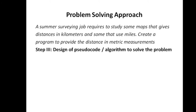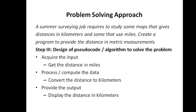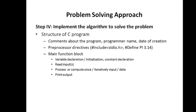In this video I will explain how to convert an algorithm into a C program, compile it, and get the output. For our problem of converting miles into kilometers, we already have the algorithm. The first step is to get the distance in miles as input, then convert the distance to kilometers, then print the distance in kilometers. This is the simple algorithm for our problem.